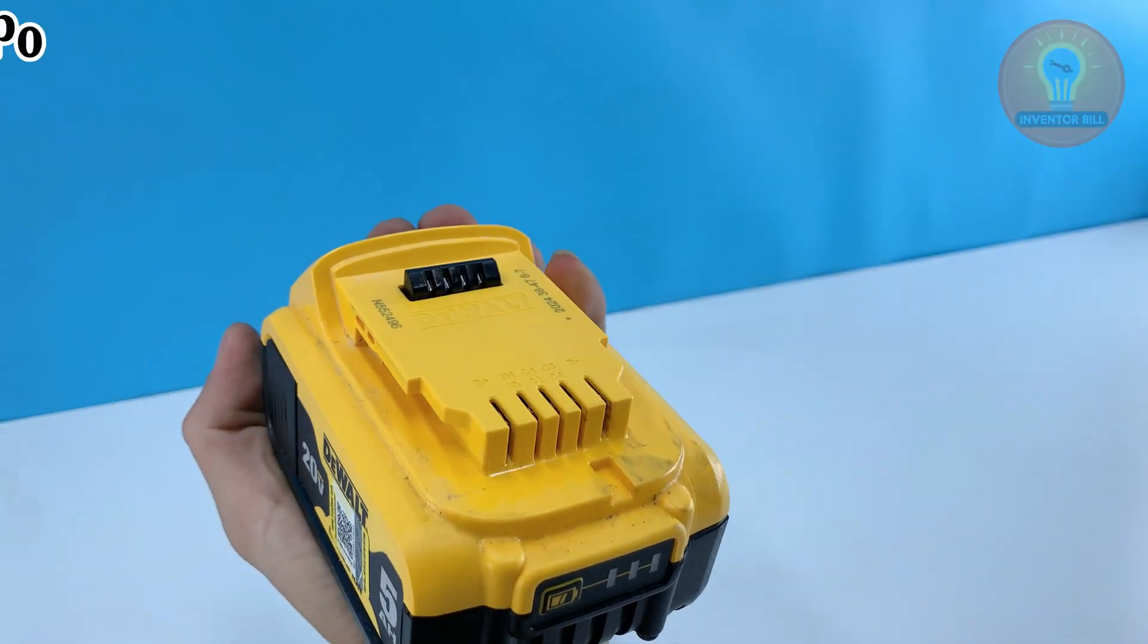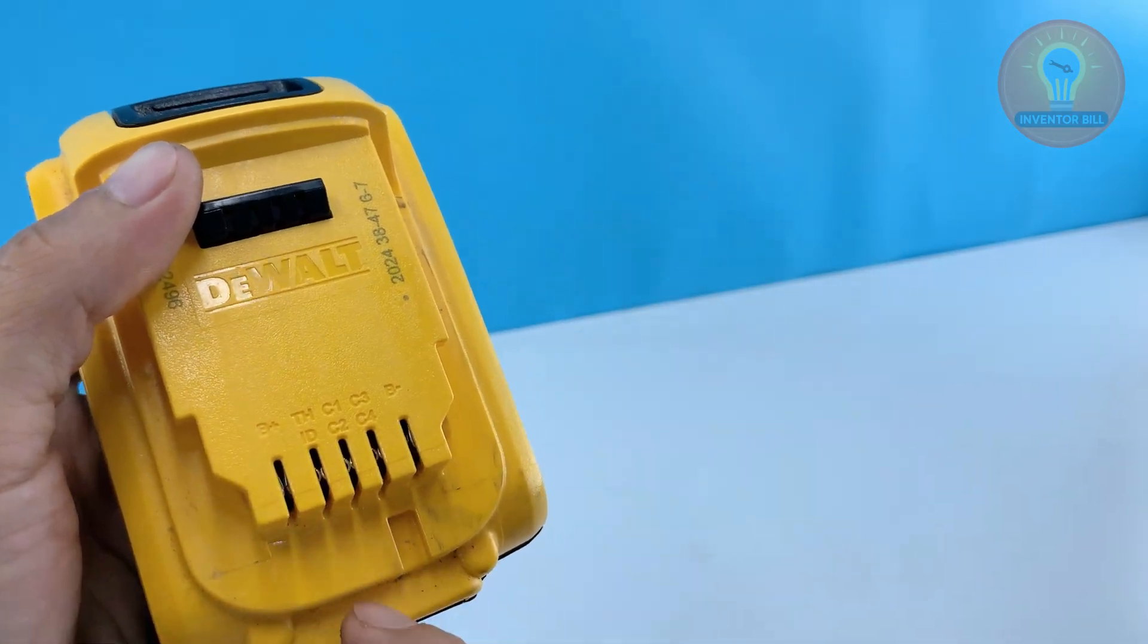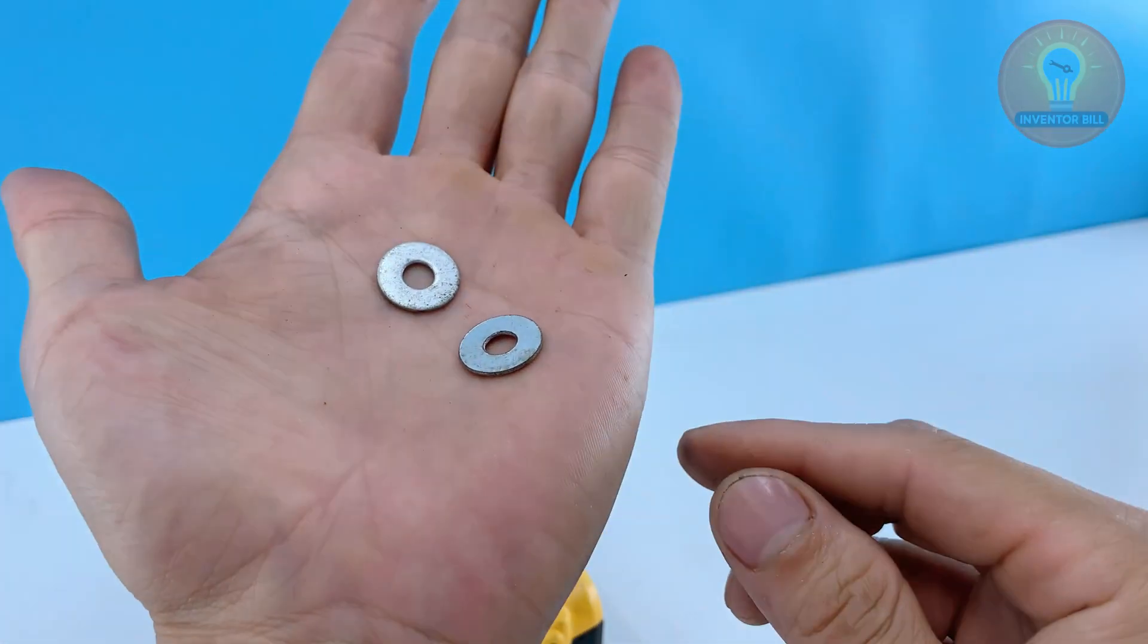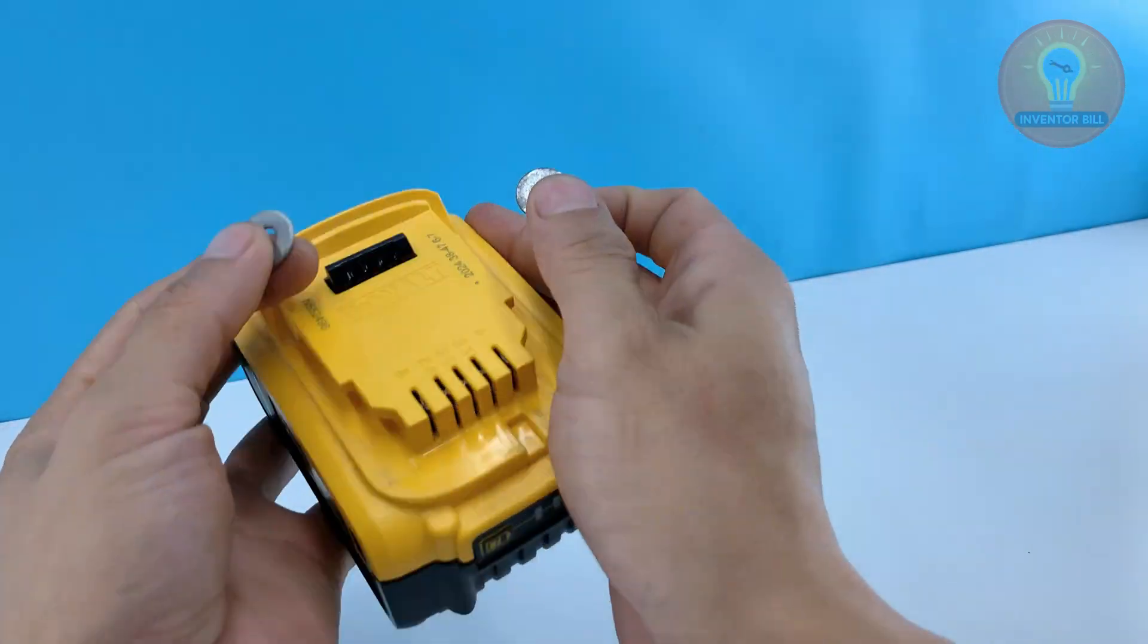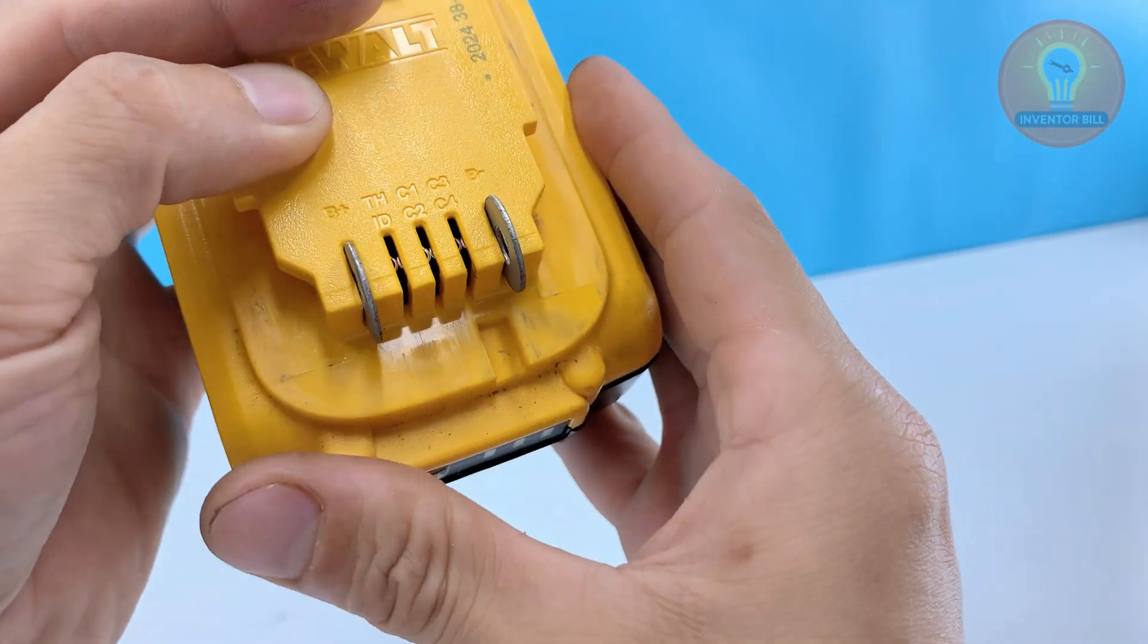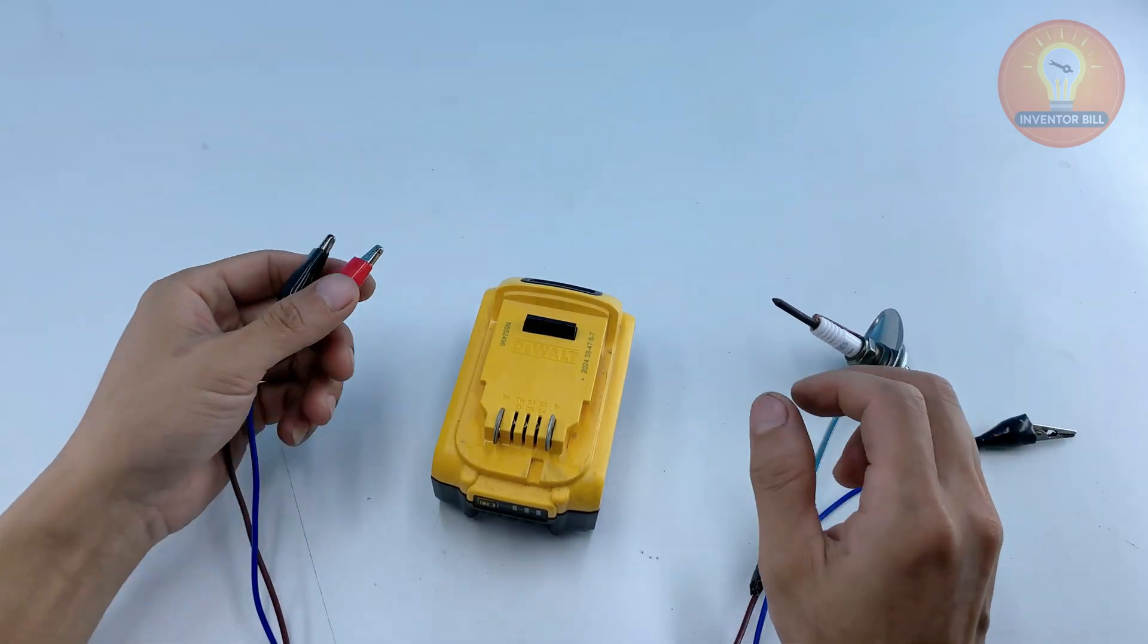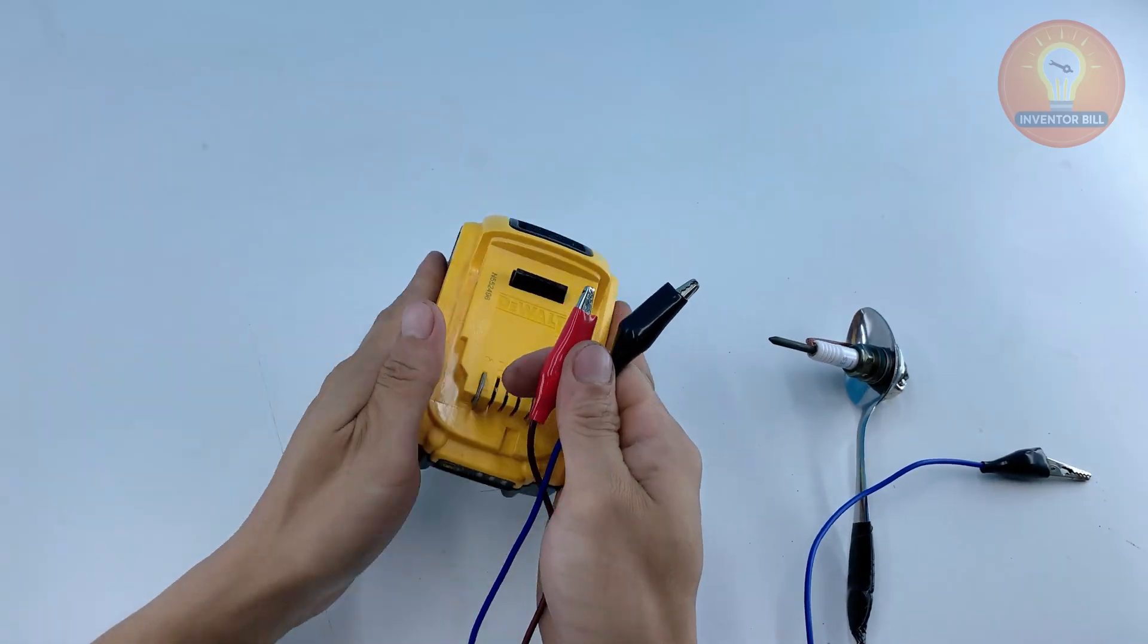When everything is in place, bring out your drill battery so we can test the arc. Clip a washer onto each terminal of the battery, then connect the alligator clip from the spoon's wire to the positive side. Take another small wire with clips on both ends and connect one end to the negative terminal.